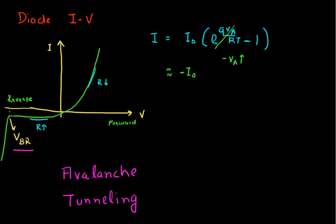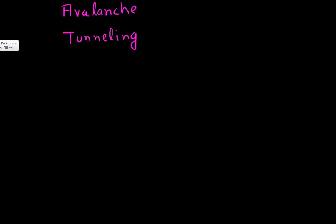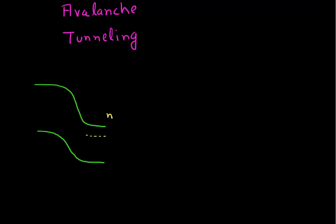Let's start with avalanche first. To talk about avalanche, I like band diagrams, so let me draw a band diagram and explain what's happening in reverse bias. Let's say I have a PN junction and I apply a reverse bias across it. If I apply a small reverse bias, this would be how my PN junction would look like — this is my N region and this is my P region. When I apply a small reverse bias, there's a very small current, which is essentially given by diffusion, coming from minority carriers on the P side — electrons — which are stray electrons that diffuse into the N region, causing this reverse bias current.